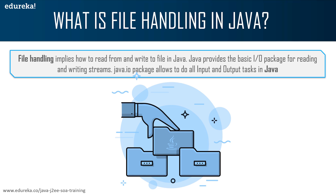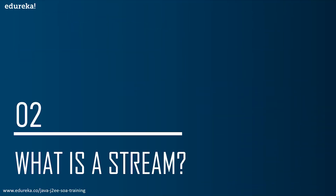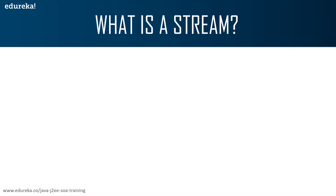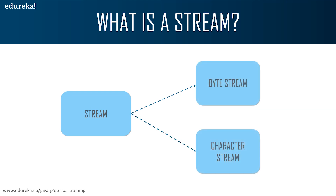Java uses the concept of streams to make input and output operations on a file. A stream is a sequence of data. It can be of two types: byte stream and character stream. Byte stream mainly incorporates byte data — when an input and output process happens with byte data, it is called the file handling process with byte stream.